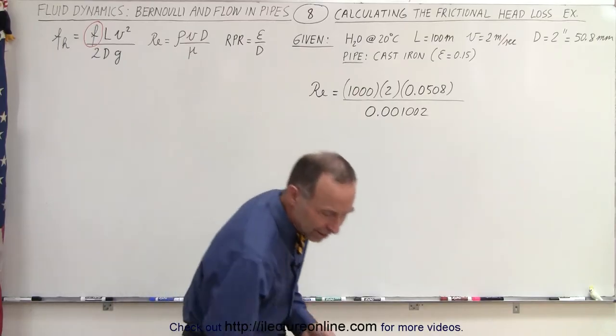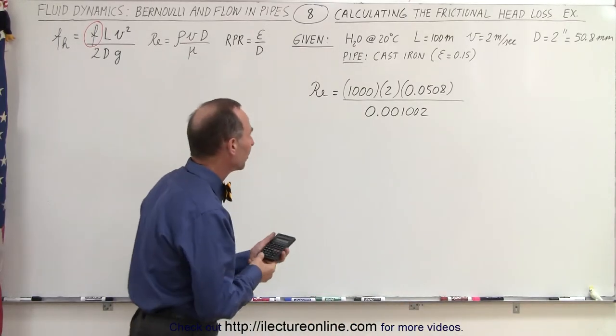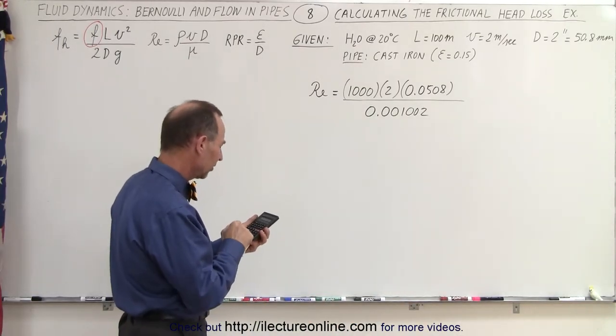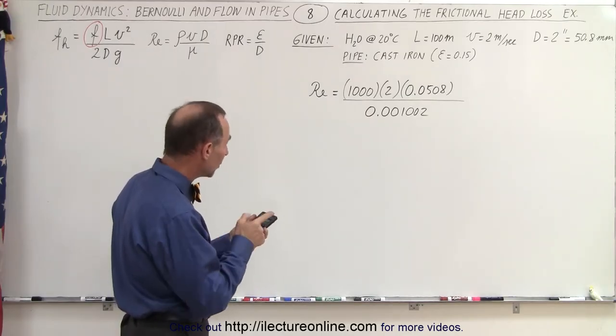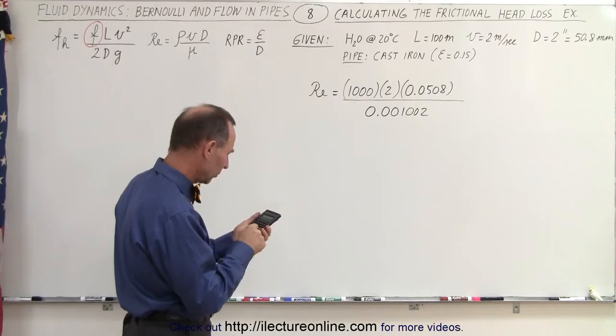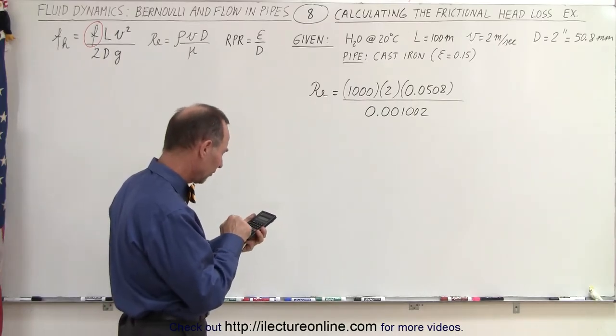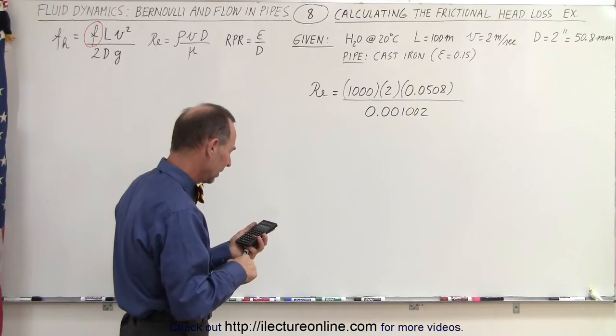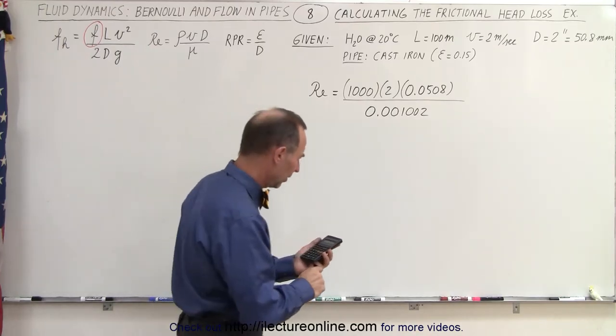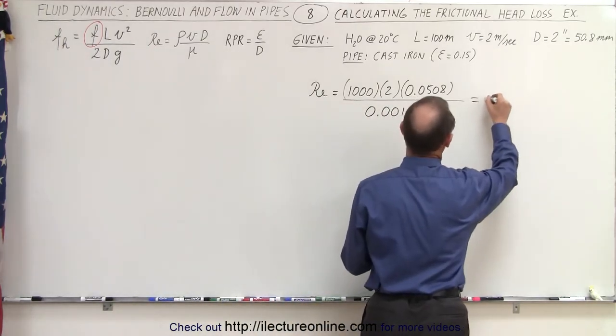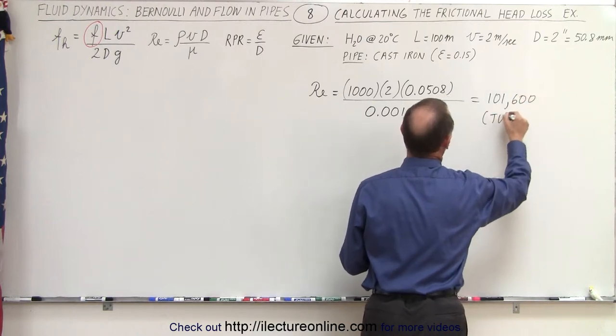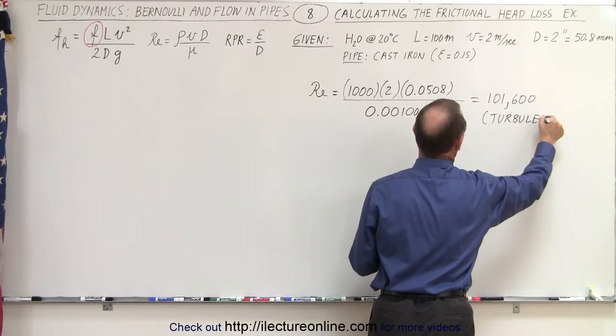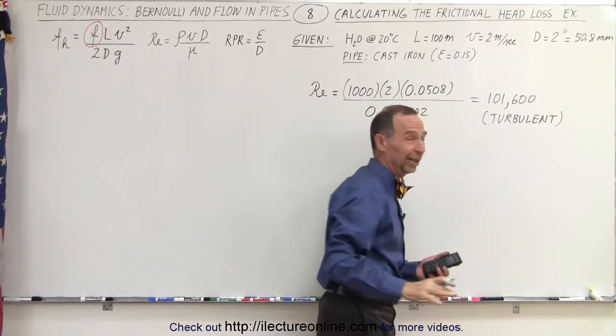And let's see what kind of Reynolds number we're going to come up with. So we take 1000 divided by 0.001 that makes it a million and we multiply times 2 and then we multiply times 0.0508 equals and that's a pretty big Reynolds number 101,600. And so therefore we can say that it's probably turbulent.